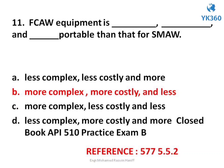Question number 11. FCAW equipment is — and portable than that for SMAW. Options are: A. Less complex, less costly and more, B. More complex, more costly and less, C. More complex, less costly and less, D. Less complex, more costly and more. Answer is option B. More complex, more costly and less.